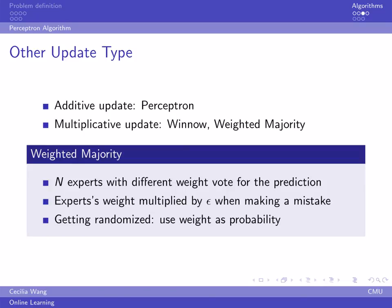In weighted majority algorithm, we imagine there are lots of experts. In each run, the experts make a prediction. If one expert is doing wrong, we cut off its weight. We follow the prediction of experts with most weight.